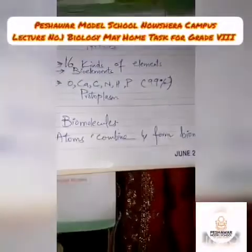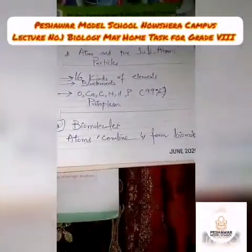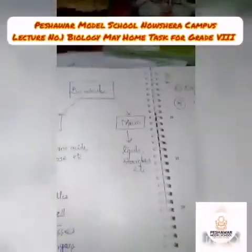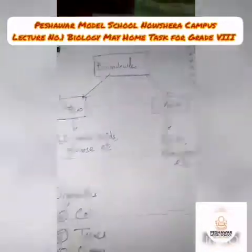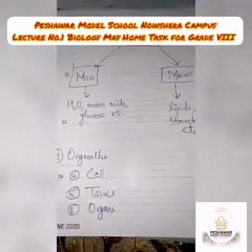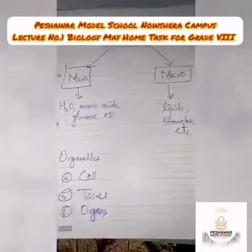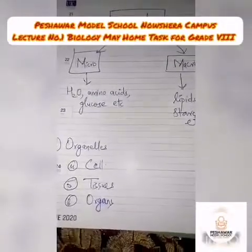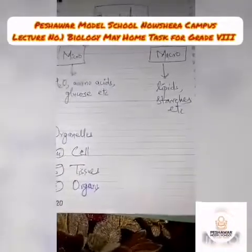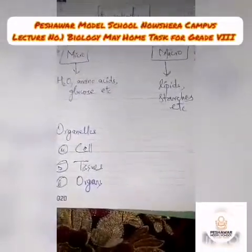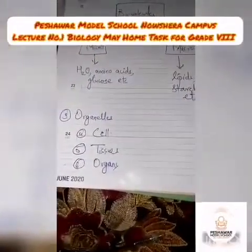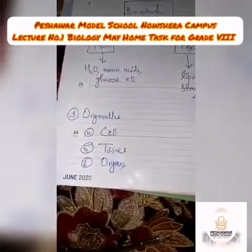These bio-elements combine together and form biomolecules, which are present inside living organisms. They are called biomolecules because they are present in biological organisms. Biomolecules are of two types: micromolecules, which include water, amino acids, and glucose; and macromolecules, which include lipids and starches — these are heavy molecular weight molecules.